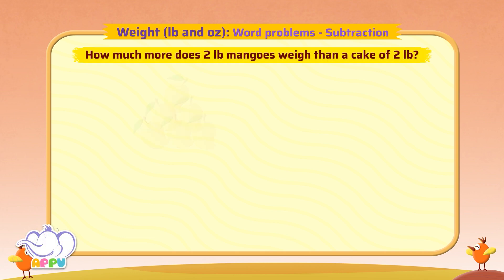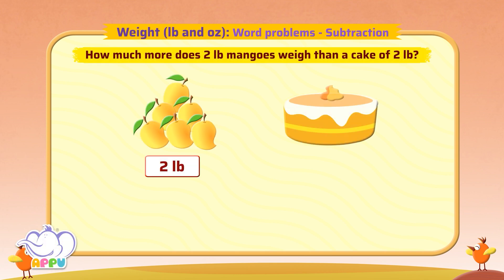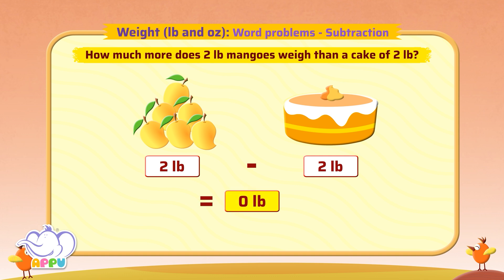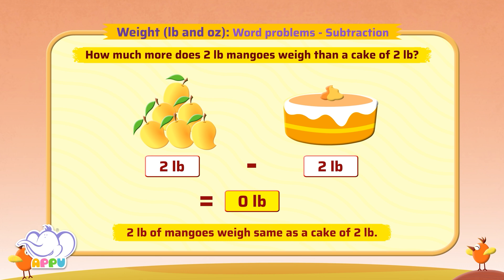How much more does two pounds of mangoes weigh than a cake of two pounds? To find the difference of weights between two pounds of mangoes and two pounds of cake, we subtract each of their weights. Two pounds minus two pounds is equal to zero pounds. So two pounds of mangoes weigh the same as a cake of two pounds. How smart!